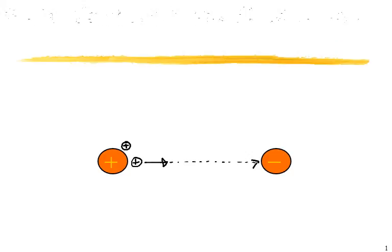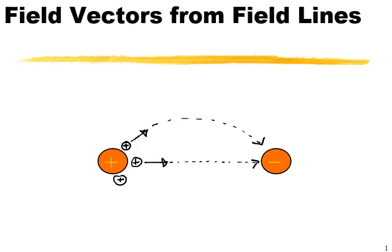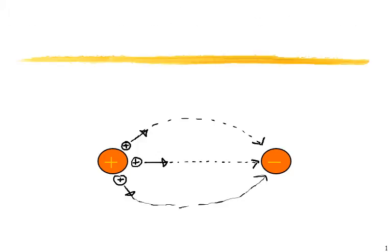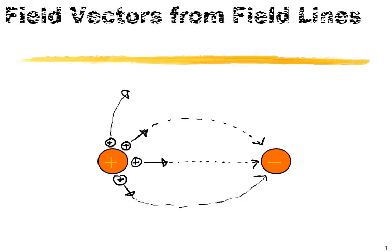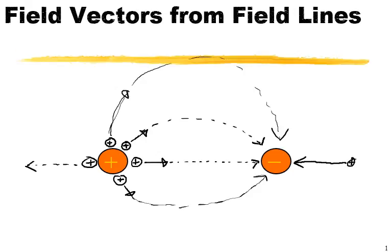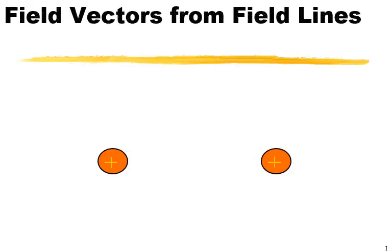That one's going to go directly across. That one's going to swing up and around. That one's going to go over and around. That one will swing up and around. That one will go straight out, and this one will come straight in. Remember, the thicker the lines — the more lines you have — the stronger the electric field.